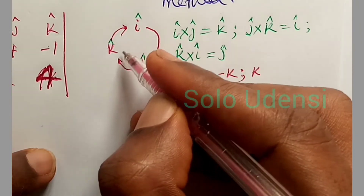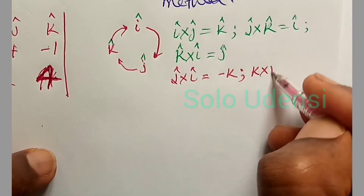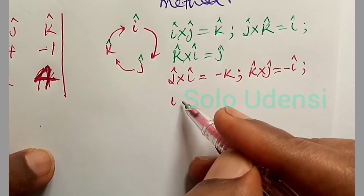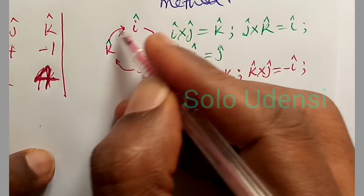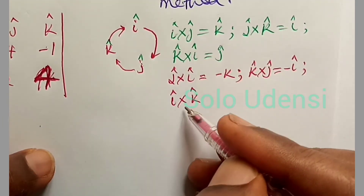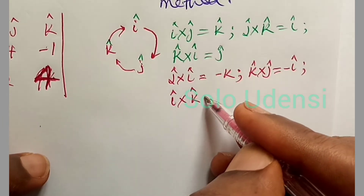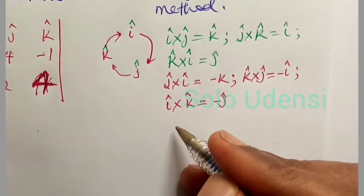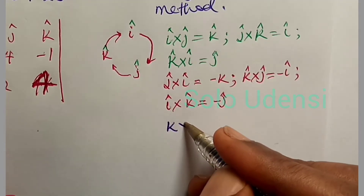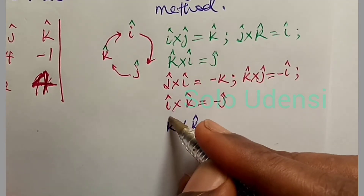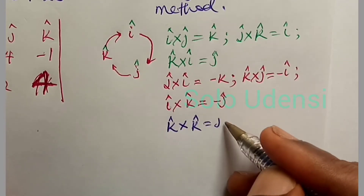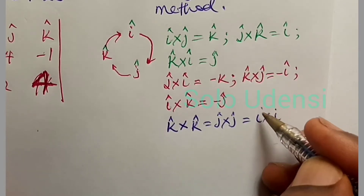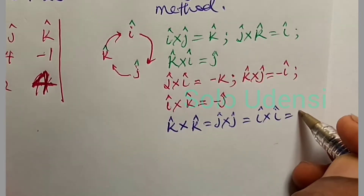K cross J gives minus î. I cross K is anti-clockwise, so we get minus ĵ. We should also know that K cross K equals zero, J cross J equals zero, and I cross I equals zero.